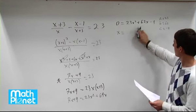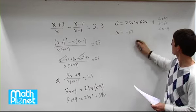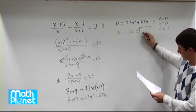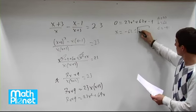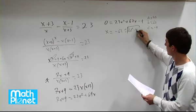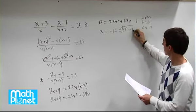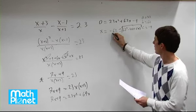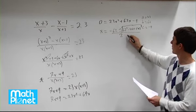So minus b, so negative 62 plus or minus the square root of b squared, which is 62 squared minus 4 times a is 23, times c, which is negative 9, all over 2 times a, which is 23.